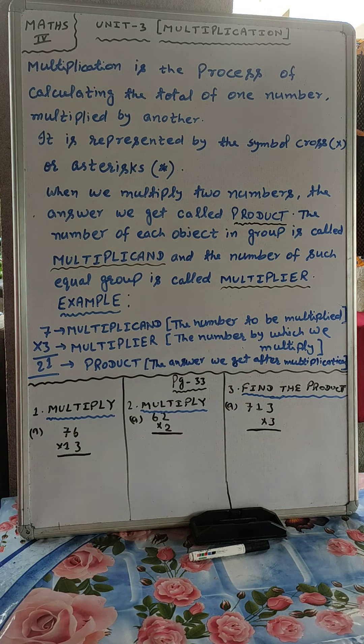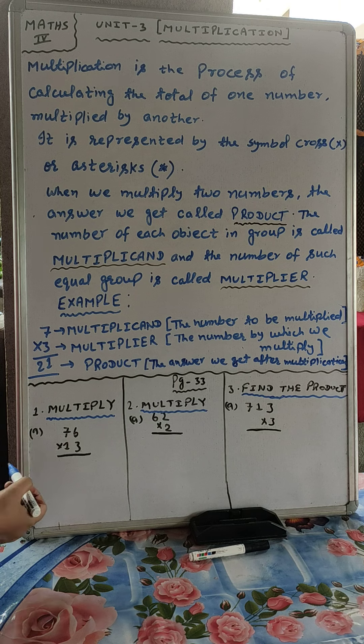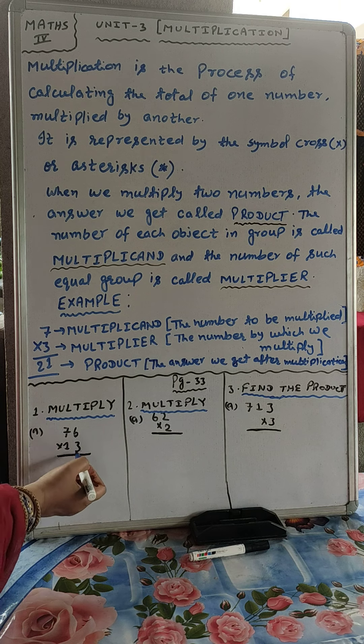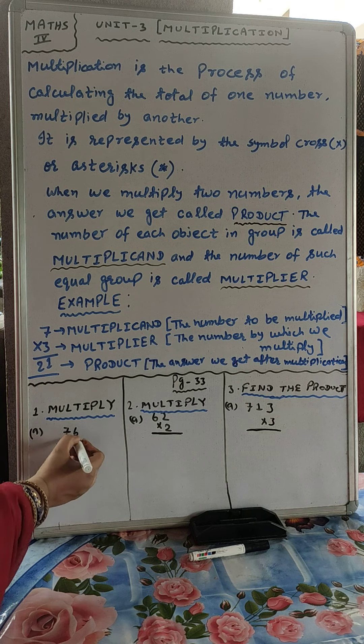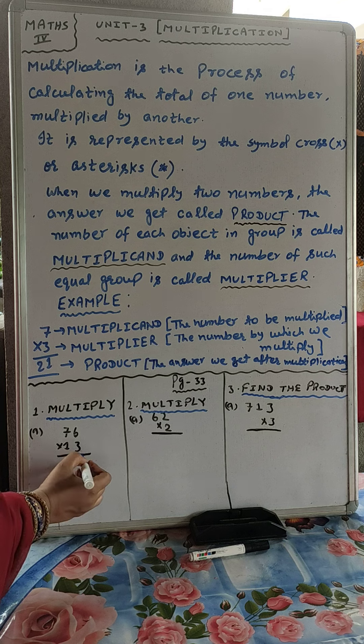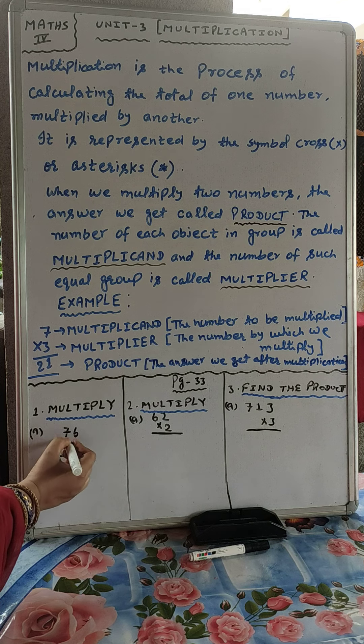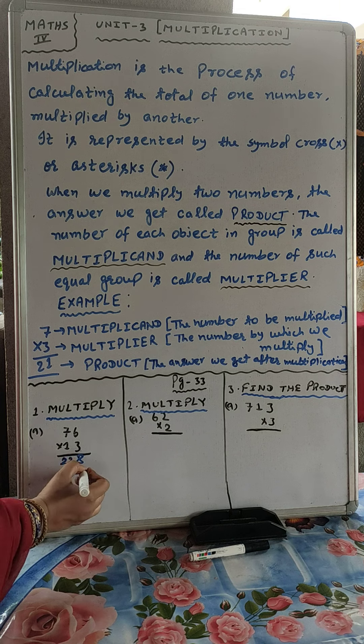Now we will solve page 33, 76 into 13. 3×6 is 18, write here 8, carry 1. 3×7 is 21 plus 1 is 22. We will put here 0.